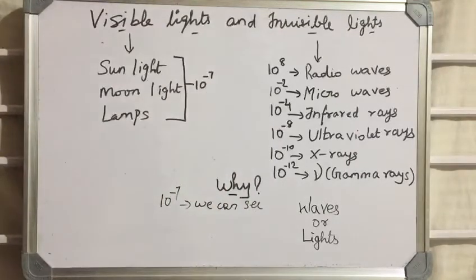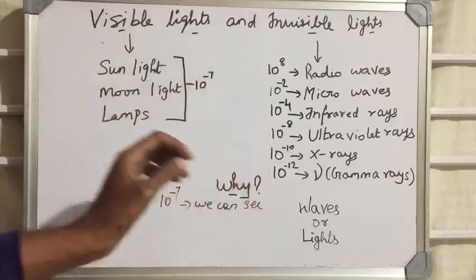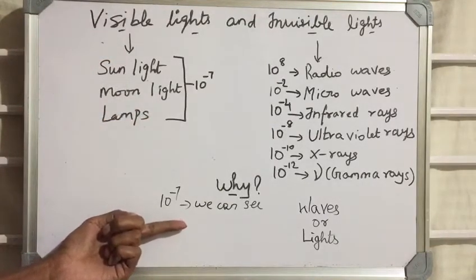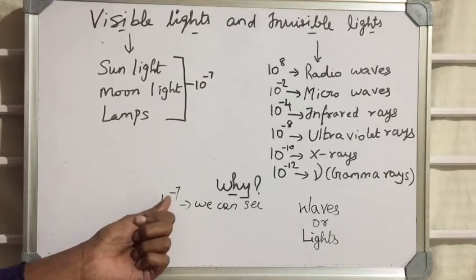It is clearly mentioned, this thing we cannot see and this thing we can see. The rays which we can see have 10 to the power of minus 7.